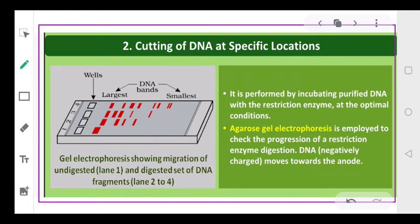The second step is cutting of DNA at specific locations. We know which enzymes perform this process — yes, the restriction enzymes. To break the DNA into specific parts, we incubate the DNA with restriction enzymes at the appropriate conditions. Because of this, the DNA breaks into segments, as you can see in the photograph. These broken segments are then subjected to electrophoresis on an agarose gel.